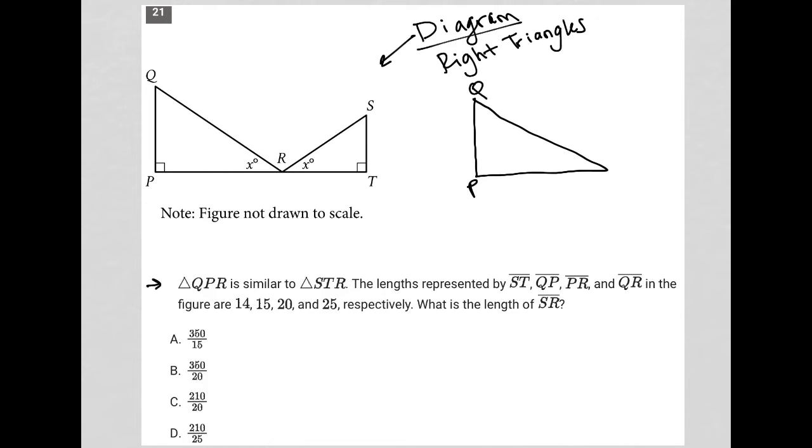So I'd have QPR, where this is X, this is my 90 degree angle, and then I'd have in the exact same orientation, right? So flipping it in the opposite direction than it is originally, I have S, T, and R with again my X degrees over there. All right, now things are in the right order, so it's obvious to see which sides are corresponding to each other.